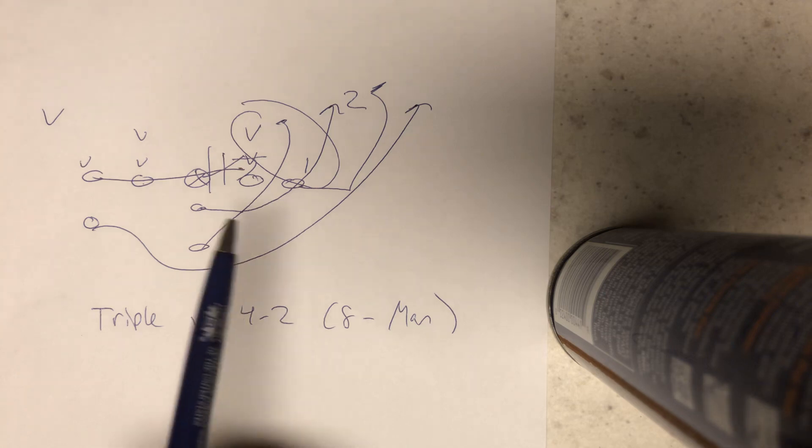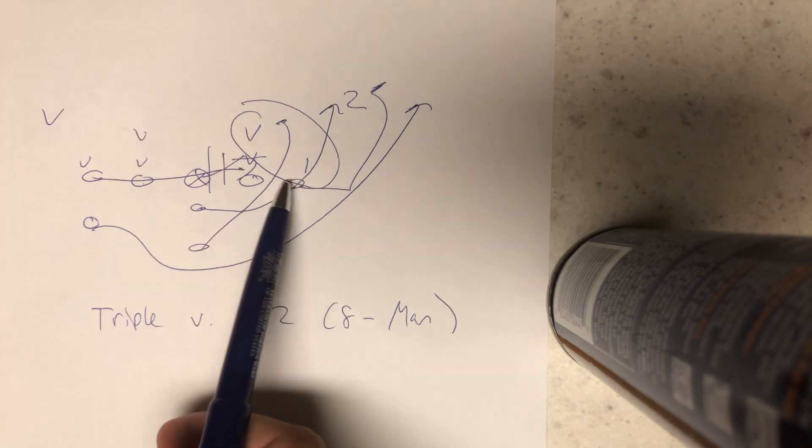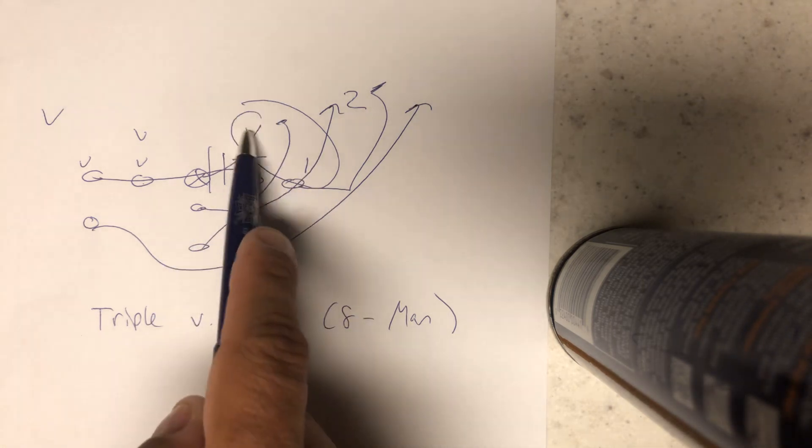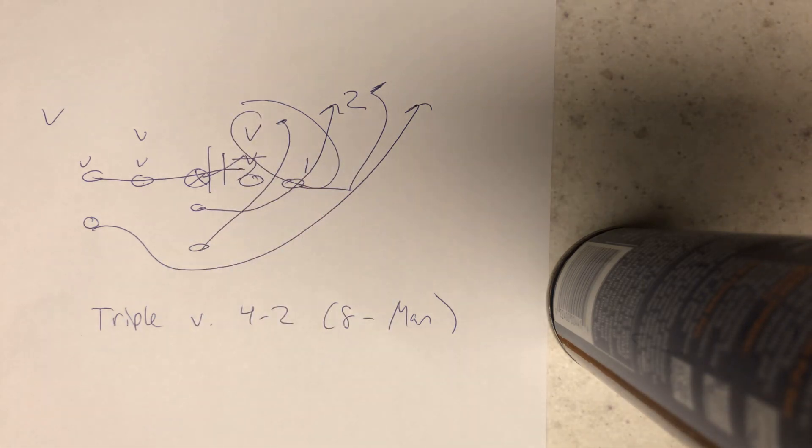Why? Because in eight-man football, the end can't veer inside to protect the B-gap, because if one takes the dive and they run the mic over the top, they got you three-on-three.